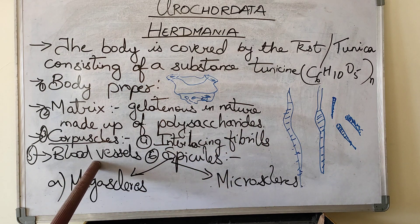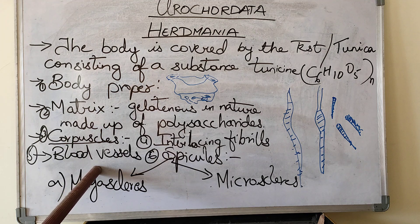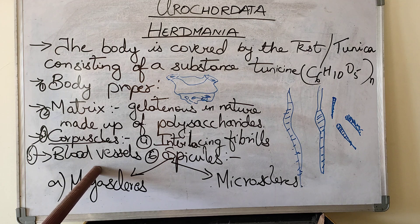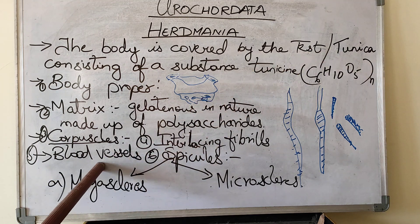Next, if you see blood vessels — these are knob-like structures called ampullae in the test. These are flattened cells with red pigment granules. The blood vessels are very close to the outer covering of the test because this helps in gaseous exchange during respiration.